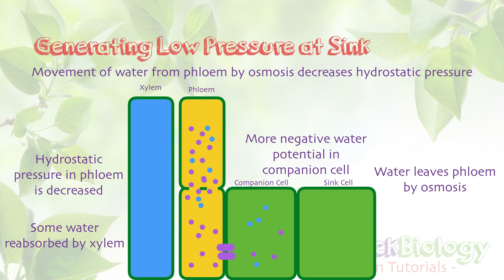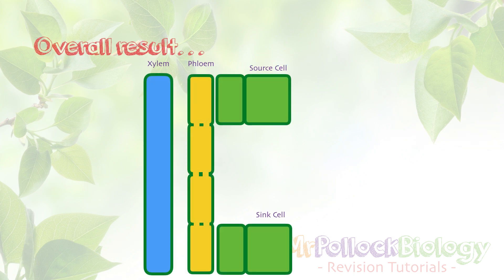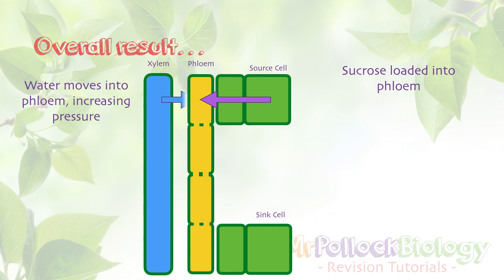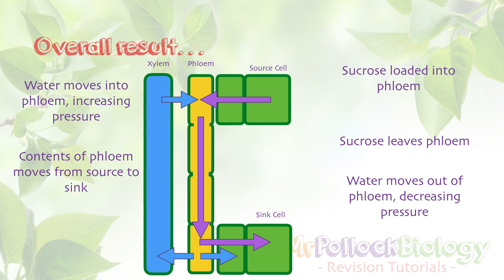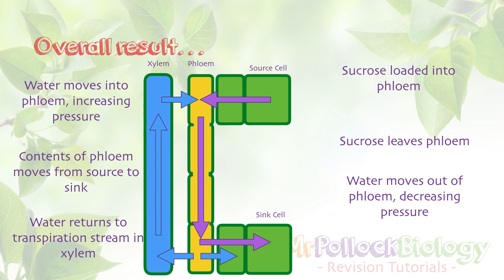Here's the whole picture. We've got the source at the top and the sink at the bottom. We load sucrose into the phloem; as a result, water moves into the phloem from the xylem, increasing the hydrostatic pressure at the source end. Meanwhile, we're actively transporting sucrose out of the phloem at the sink — where it can be stored as insoluble starch or respired — and water then moves out by osmosis. This results in the contents of the phloem moving from source to sink due to the pressure difference, with some water returning up the plant in the transpiration stream via the xylem.